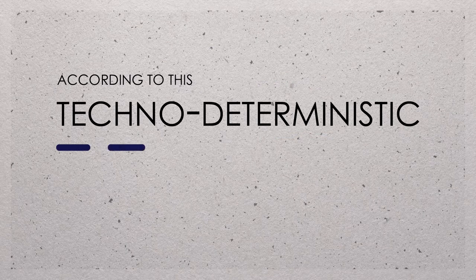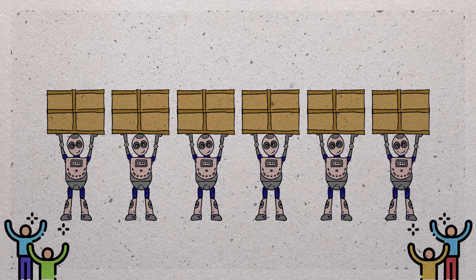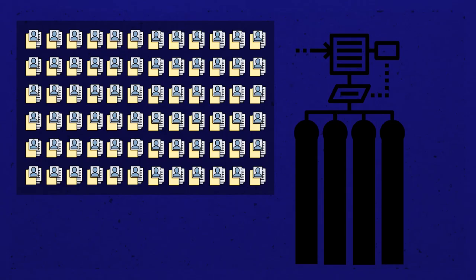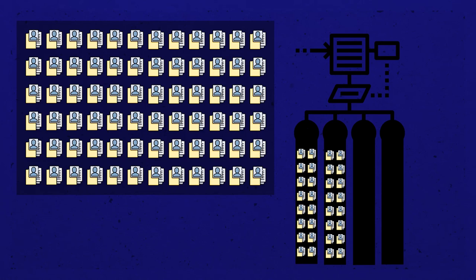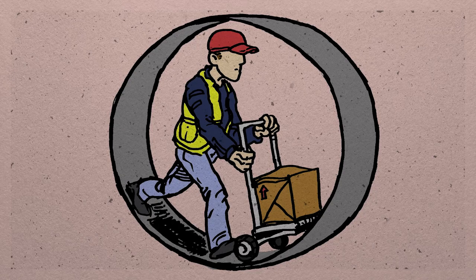According to this techno-deterministic approach, people would work less and only focus on pleasant tasks. But the other side of the story is that algorithms are also used to manage existing work and make people work more.